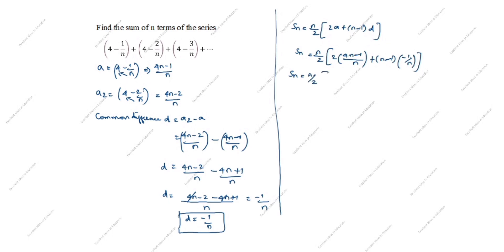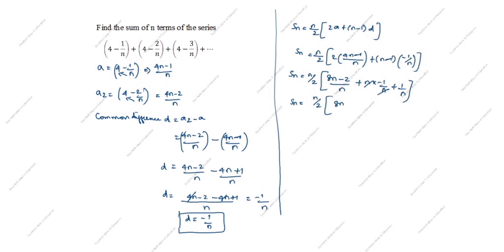Expanding inside the bracket: 2 × (4n-1)/n gives (8n - 2)/n. For the second part, (n-1) × (-1/n) = -n/n + 1/n. The n terms cancel, giving -1 + 1/n. So Sn = n/2 × [(8n - 2)/n - 1 + 1/n].